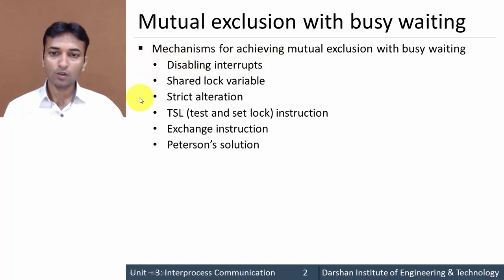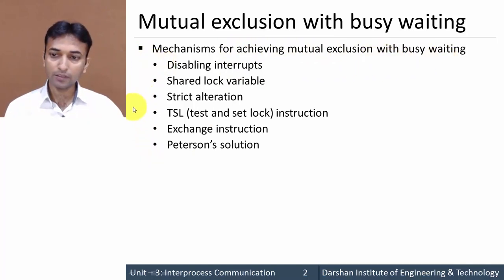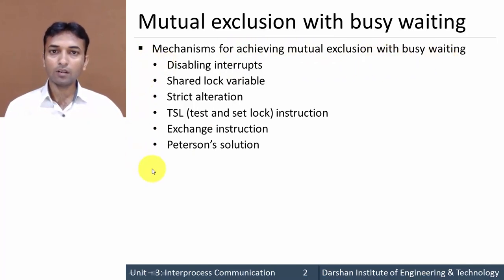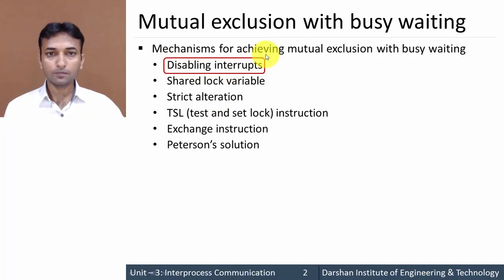We have different mechanisms to achieve mutual exclusion. These are the six different mechanisms for achieving mutual exclusion with busy waiting. We will learn each and every mechanism one by one, but in this video we will learn about disabling interrupt.